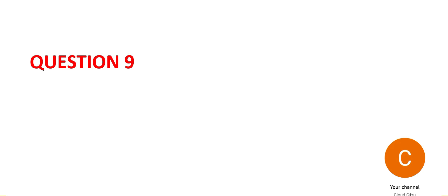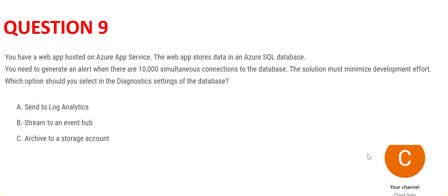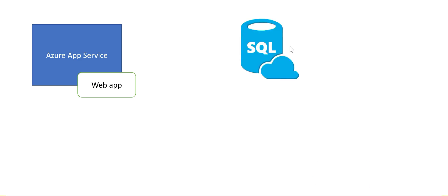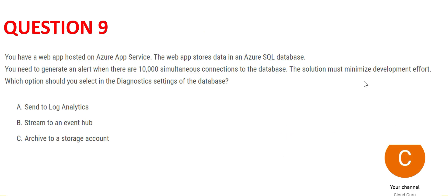Let's look at Question 9. Understand the story first: you have an Azure App Service hosting your web application, and the data is stored in an Azure SQL Database. We need to generate alerts if there are 10,000 connections to the database, and we should minimize the dev effort. What option should we select in the diagnostic setting of the database?